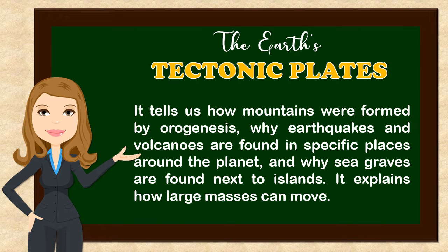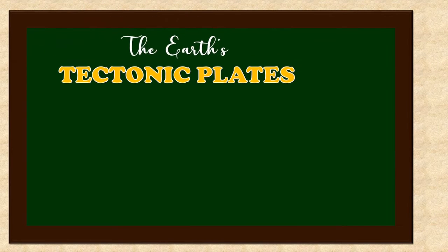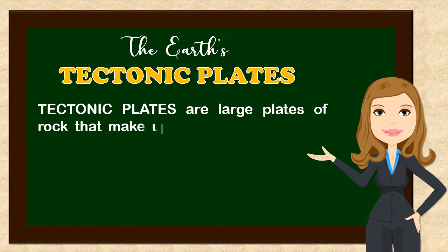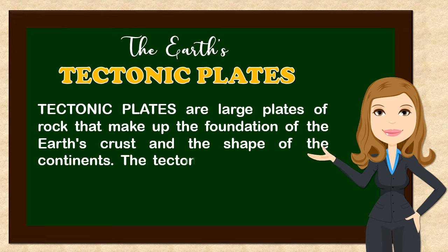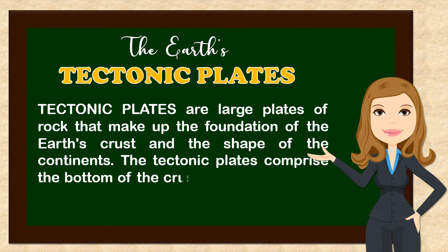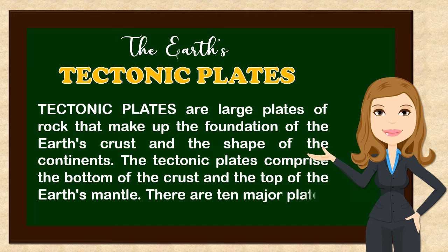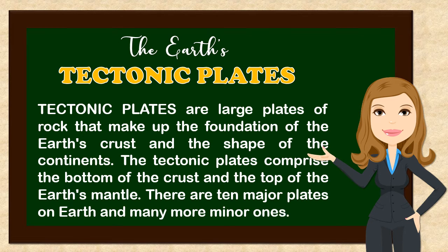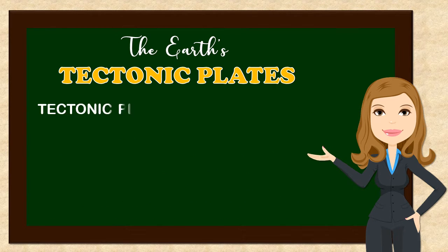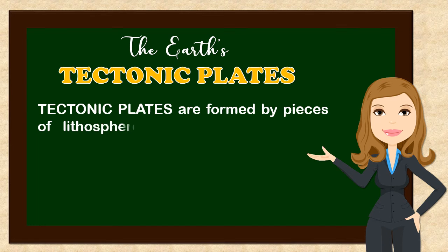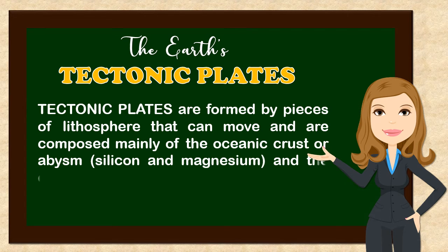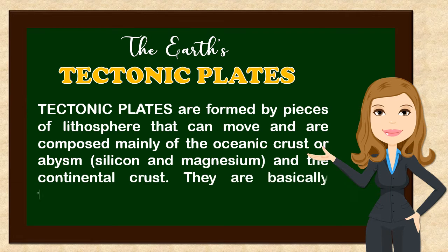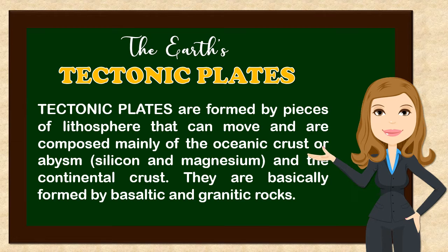Tectonic plates are large plates of rock that make up the foundation of the Earth's crust and the shape of the continents. The tectonic plates comprise the bottom of the crust and the top of the Earth's mantle. There are 10 major plates on Earth and many more minor ones. Tectonic plates are formed by pieces of lithosphere that can move, and are composed mainly of oceanic crust — silicon and magnesium — and the continental crust. They are basically formed by basaltic and granitic rocks.